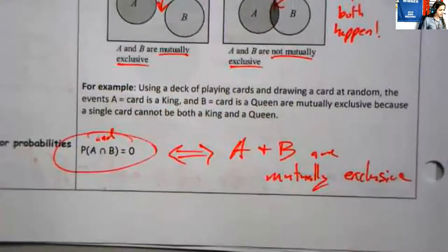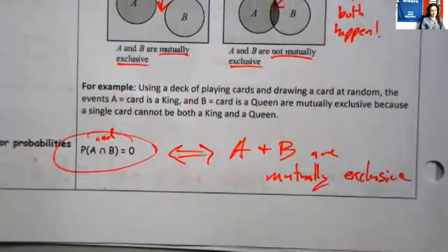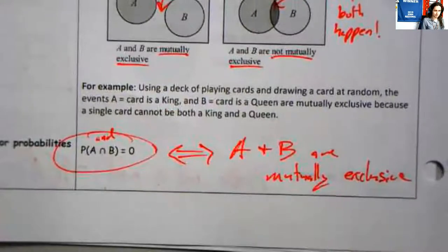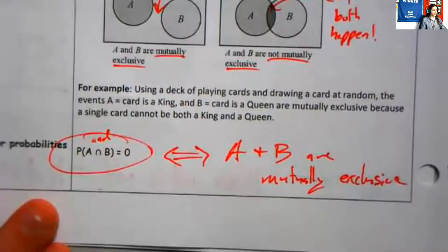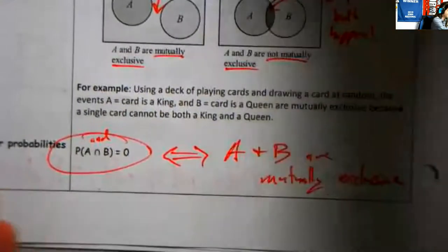So we can talk about mutual exclusivity, complements, intersections, and unions. I know what probabilities have to be between, and I know what probabilities have to add up to. So I know a lot about probabilities now, and we can do some problems with these probabilities.